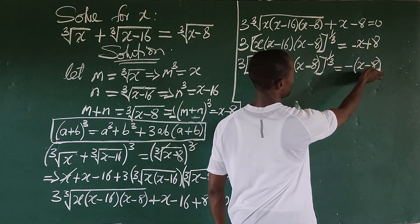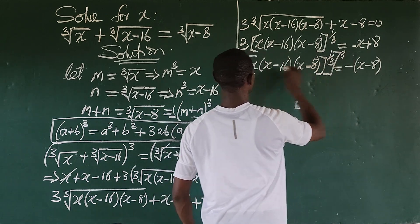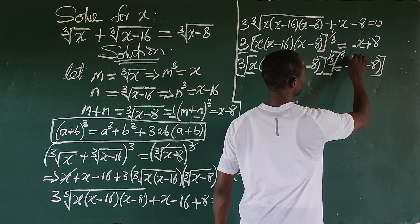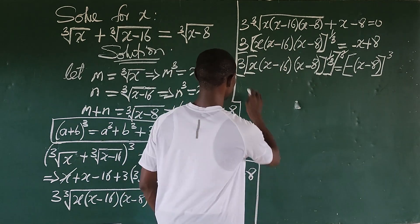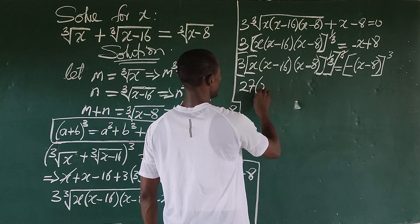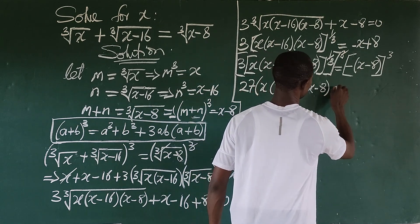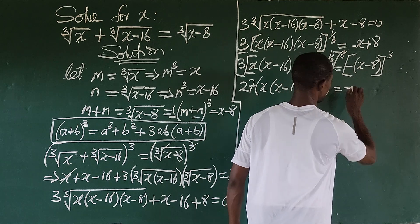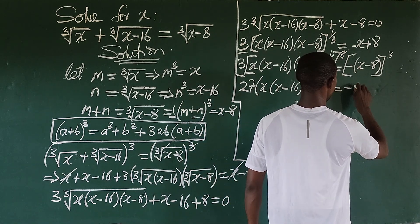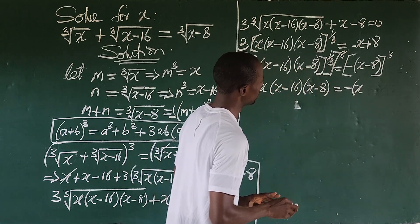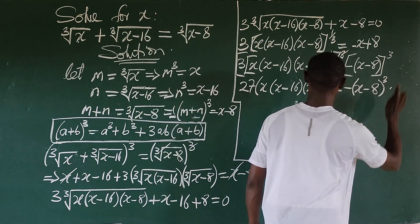Now we cube both sides of the equation. On the left, the cube root cancels. On the right, cubing gives us minus (x minus 8)³, since minus times minus times minus is minus. So we have: 27 times x times (x minus 16) times (x minus 8) equals minus(x minus 8)³.